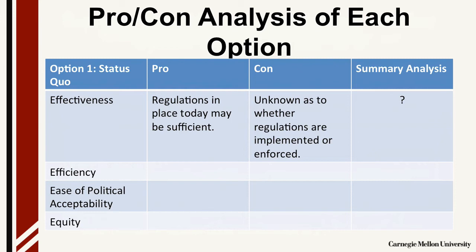For example, on the pros side for effectiveness, we know that there are existing regulations in place today that may be sufficient. But on the cons side, we don't know if those regulations are implemented or enforced. As a result, our summary analysis is a question mark — we don't have sufficient information. The key principle to keep in mind if you're having a hard time thinking of cons is: if your idea is so great, why isn't it happening now? Or alternatively, imagine you are the person in charge of implementing the policy option — what would you need to do to make it happen, and what challenges would you face?